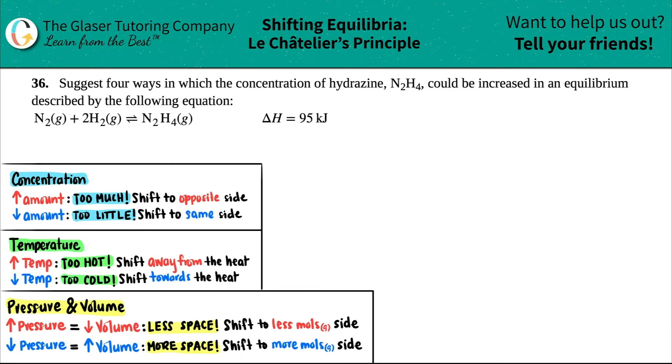Number 36. Suggest four ways in which the concentration of hydrazine, which is N2H4, could be increased in an equilibrium described by the following reaction. And then they give us the reaction here with the delta H.